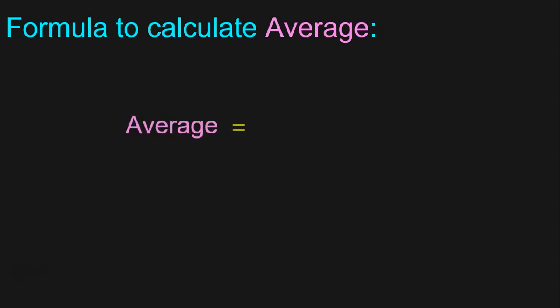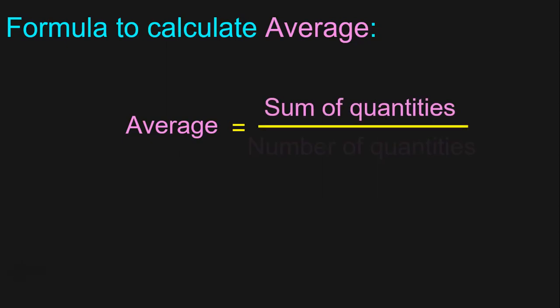Till now, we saw theoretically what is an average. Now we need a formula to calculate average mathematically. The formula to calculate average is nothing but sum of quantities divided by number of quantities. Let us understand the usage of this formula to find out average with the help of example sums.